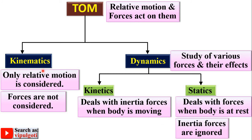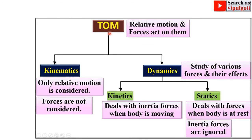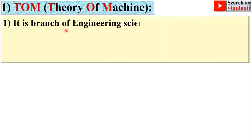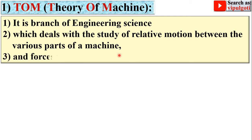Now we will discuss one by one all this terminology briefly. Starting with the first term, theory of machine: it is a branch of engineering science which deals with the study of relative motion between the various parts of a machine and the forces which act on them. The definition is intentionally divided into three different parts to make it easy to remember and understand.